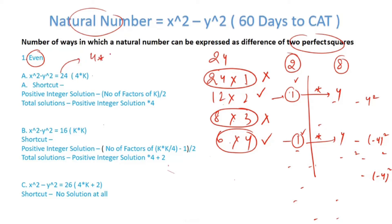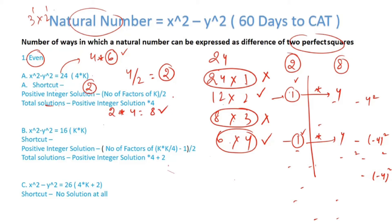What's the shortcut? Express 24 as 4×6. Take the number 6. The number of factors of 6 is: 6 = 3×2, so factors = 2×2 = 4, divided by 2 equals 2. So positive integer solutions = 2, and total solutions = 2×4 = 8. Now let's take another even number that is a perfect square — for example, 16.